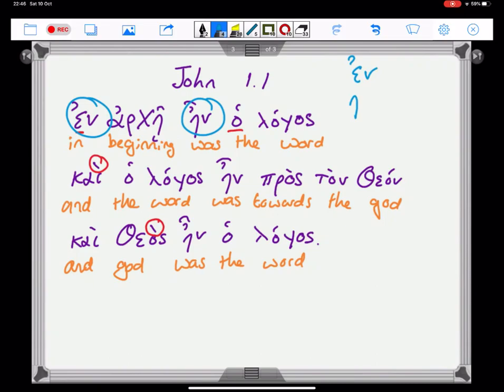You might also notice the importance of breathings if you look at things carefully. In this text, you have en and en. Vowel length matters. En means in. En means was. Straight after this passage, you then get hen.